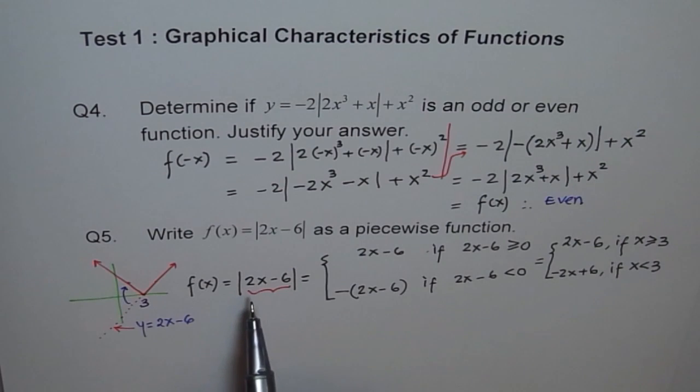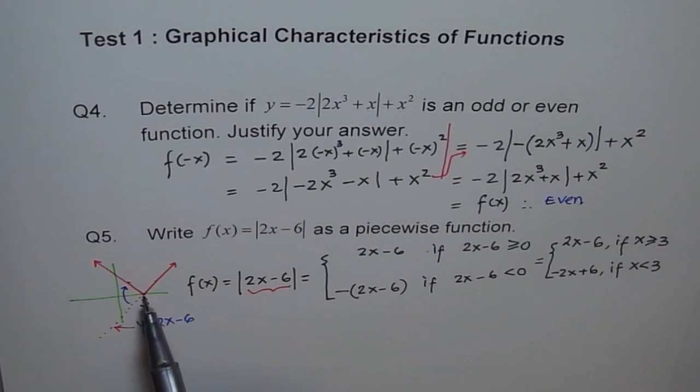So basically, this absolute function is a piecewise function, where the two pieces are two lines. One line is minus 2x minus 6 and the other one is 2x minus 6. I hope you understand. Thank you.